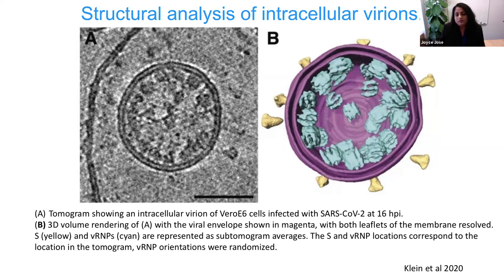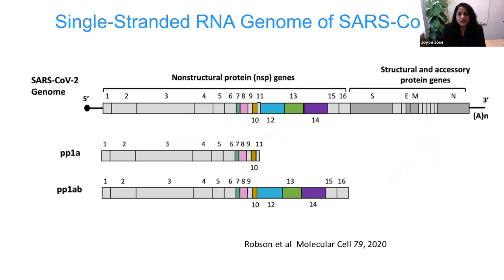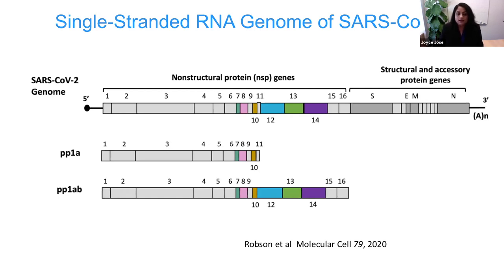We don't really know exactly the arrangement of structural proteins in the intact virion. What we have so far was published in 2020 by Klein et al. This is a positive-strand RNA virus, meaning the genome itself is infectious — once the RNA comes into the cell, it can make proteins. SARS-CoV-2 is the biggest RNA genome-containing virus, around 30 kilobases in length.